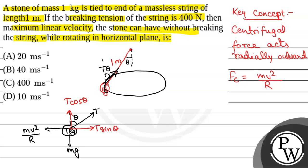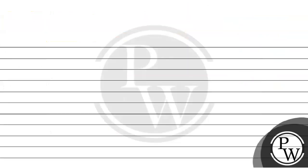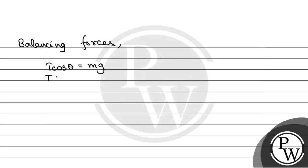Since we have to find the maximum linear velocity and there is no net acceleration, balancing forces in both horizontal and vertical directions, we have T cosθ = Mg and T sinθ = Mv²/R.